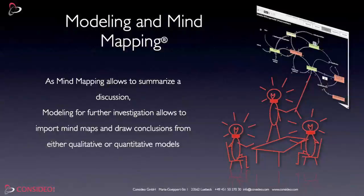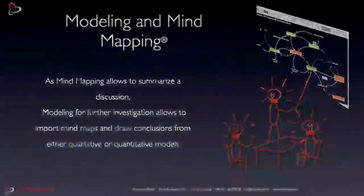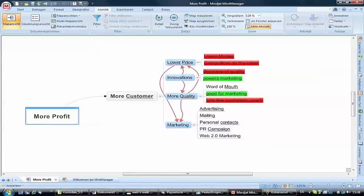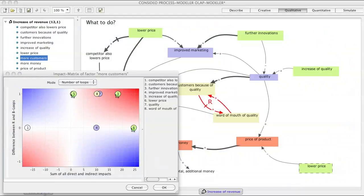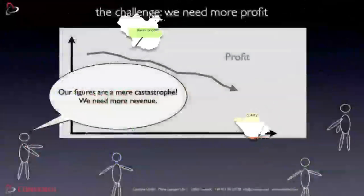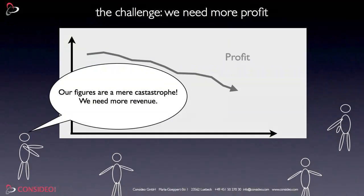Hi, today I would like to demonstrate how mind mapping and modeling can go hand in hand to help you, for example, with business decisions. Mind mapping summarizes the situation, modeling shows the potential risks and possible measures. Our example is a very small one: some managers are discussing how to make more profit.